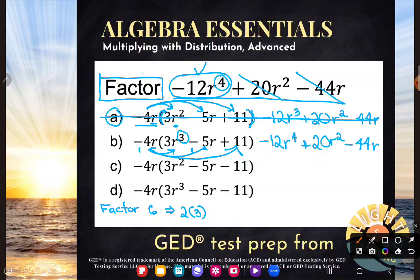And now this guy checks. Negative 12r to the fourth power, 20r squared, and negative 44r. Lovely. Nice job. B is the correct answer.